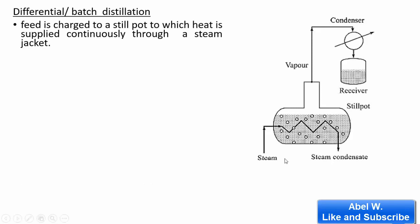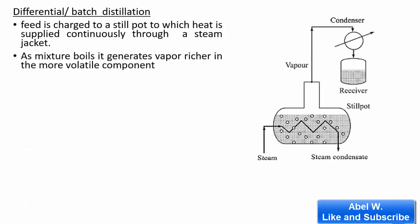Heat is supplied continuously through steam or any boiler. As you can see here, you have a distillation still with a liquid mixture. Heat is continuously added to the system, so as the mixture starts to boil it generates vapor. This vapor is richer in the more volatile component, while at the same time the volatile component in the liquid decreases — the liquid in the still becomes steadily weaker.